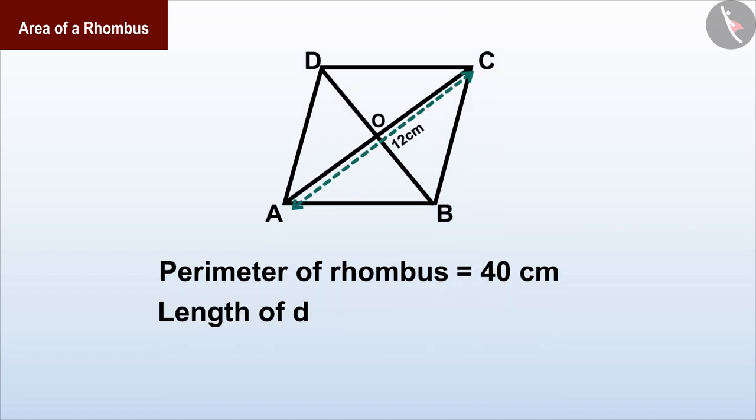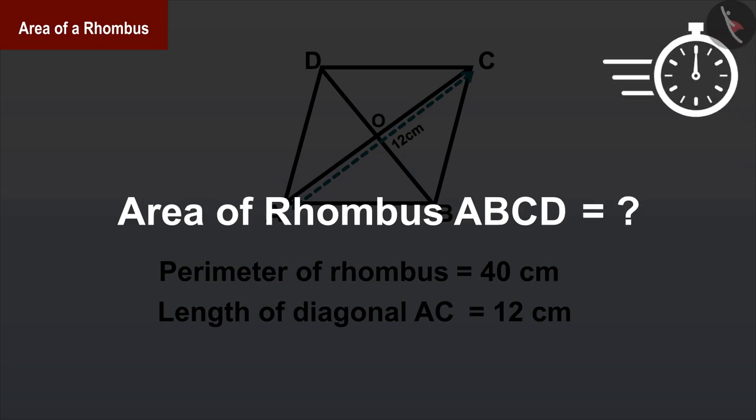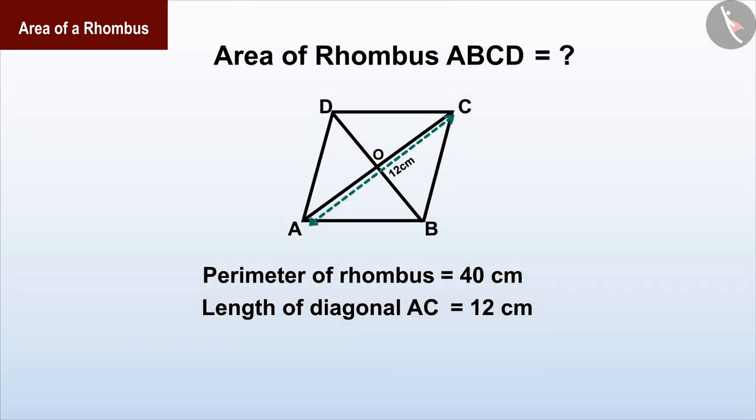If the length of a diagonal is 12 centimeters, can you tell the area of the quadrilateral ABCD? But in this question, length of only one diagonal AC is given. Now the question is how to find the length of the second diagonal BD.